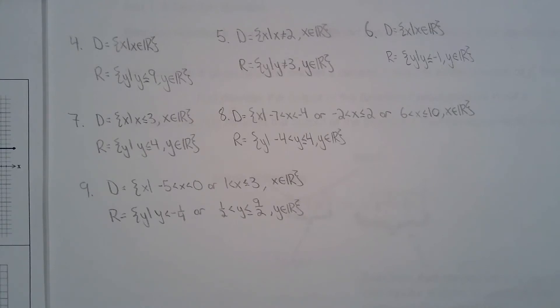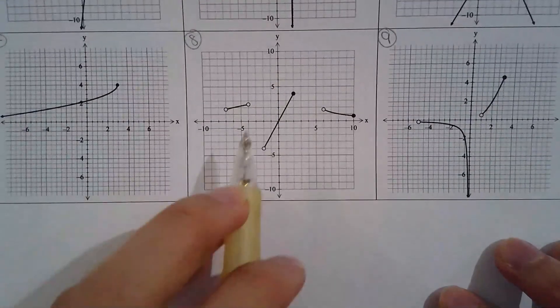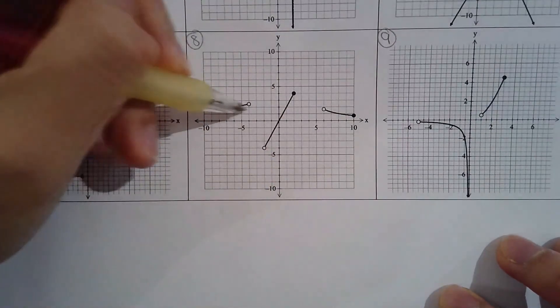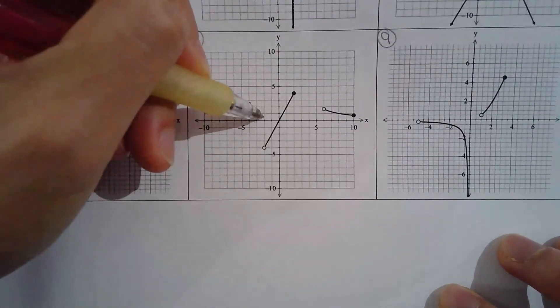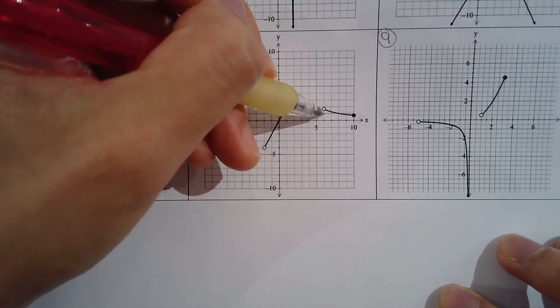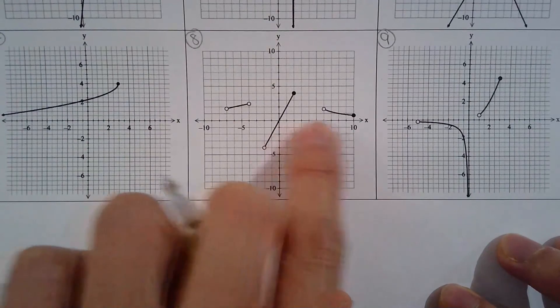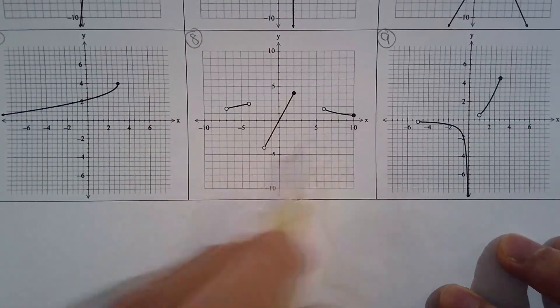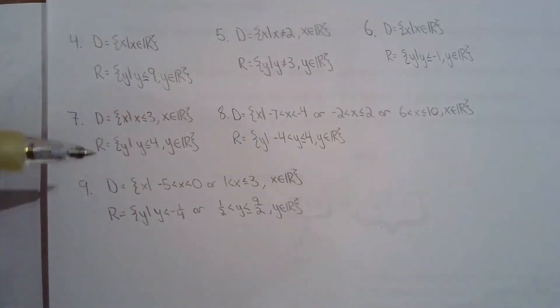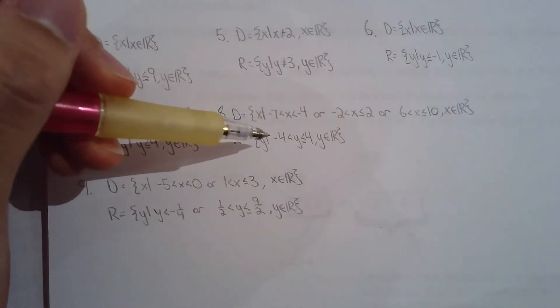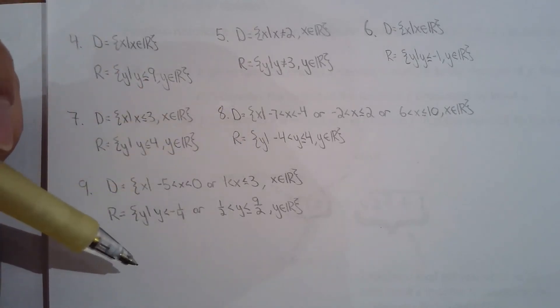For question eight and nine I really broke down the domain, so let's take a look. For question eight you have three branches. X can be, for this interval, from negative seven to negative four, and then here is from negative two to two, and then from six to ten. And now you have to include the endpoint of two and include one of ten because you have a closed circle as opposed to an open circle. So that's how I got the domain here. Now as for range, I just looked at the possible values of Y and it's greater than negative four but has to be less than or equal to four. Yeah, and that's just by observation of the graph.